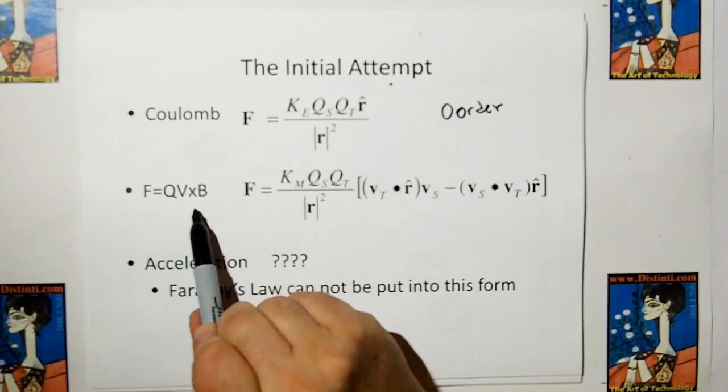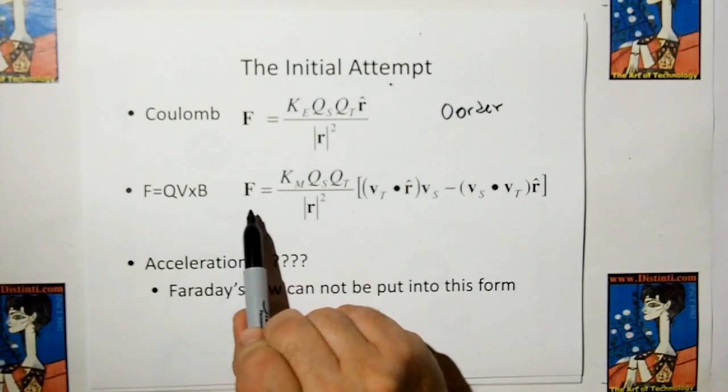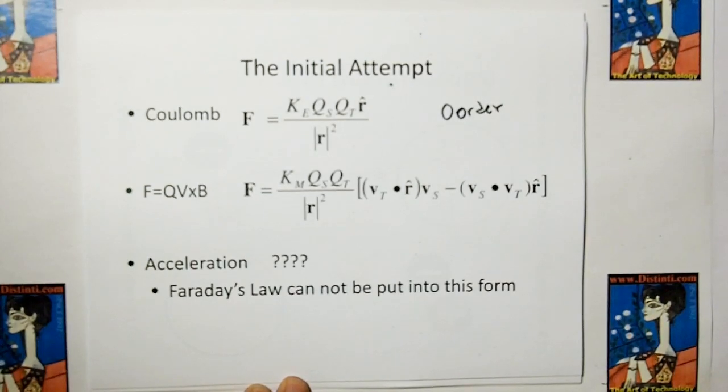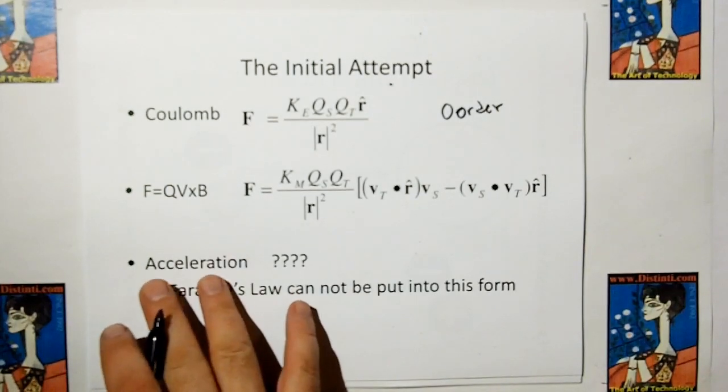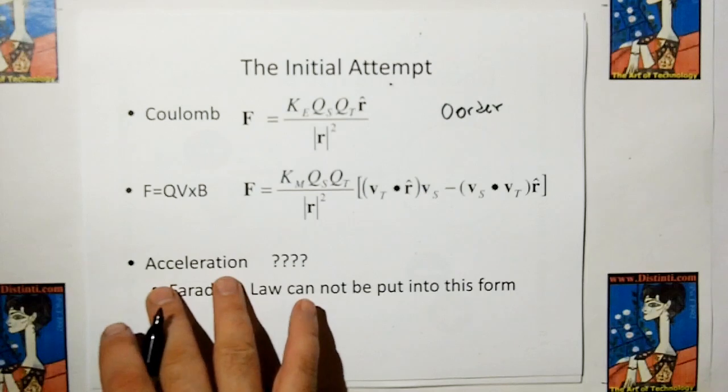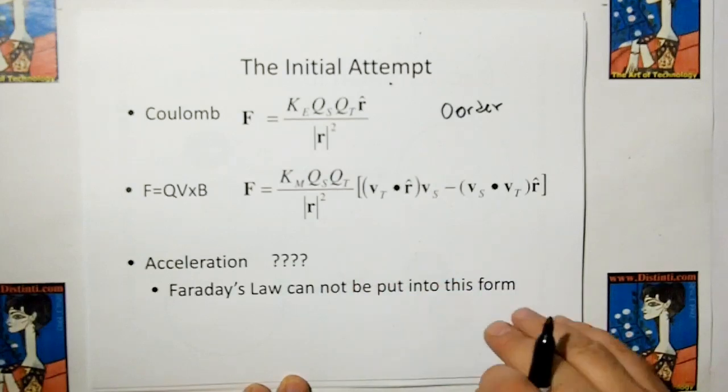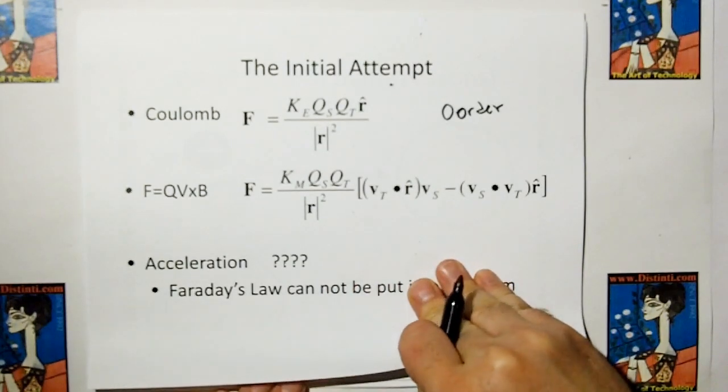We can take F equals QV cross B, combine that with the Biot-Savart law, and we end up with this. So it looks like we have a magnetic model. But then for acceleration, acceleration would be charge changing current, which would be Faraday's law. Faraday's law cannot be put into this form. And that struck me as odd.